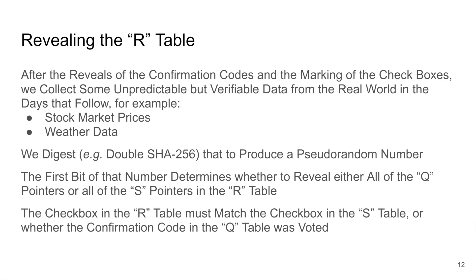After the reveals of the confirmation codes and the marking of the checkboxes, we collect some unpredictable but verifiable data from the real world in the days that follow — for example, stock market prices and weather data. A word of caution, however: stock volume data can take many days to finalize, which caused problems in Tacoma Park in 2009. By contrast, opening and closing prices seem pretty stable. In general, you need to confirm with the issuing authority how the data is finalized before deciding what data to use. We then compute the digest of that data to produce a pseudo-random number. One popular digest algorithm is double SHA-256, the digest algorithm used by Bitcoin.